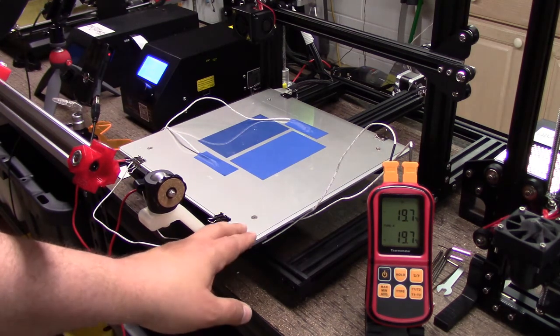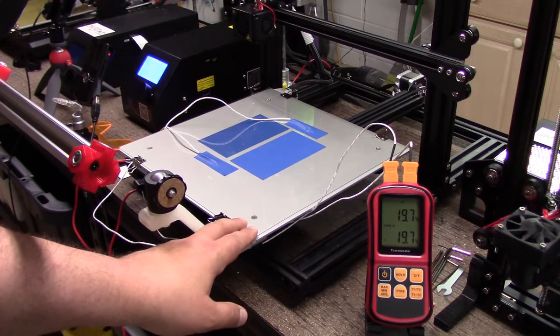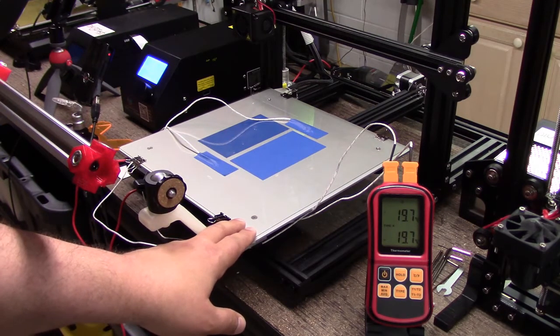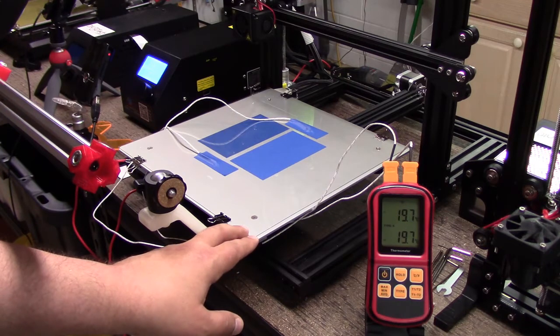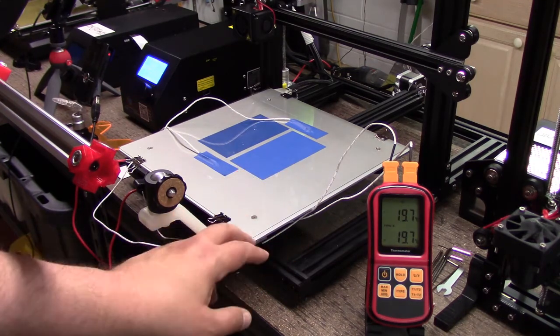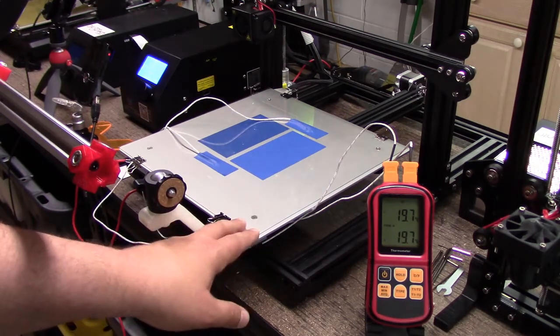So one of the things a number of folks pointed out, which they're correct, basically to the thermal camera, the PEI bed or this covering is basically translucent and it's reading the bed. But a lot of people complained and stated, hey, you can't read off a shiny bed. I'm not so sure I agree with them on that piece.